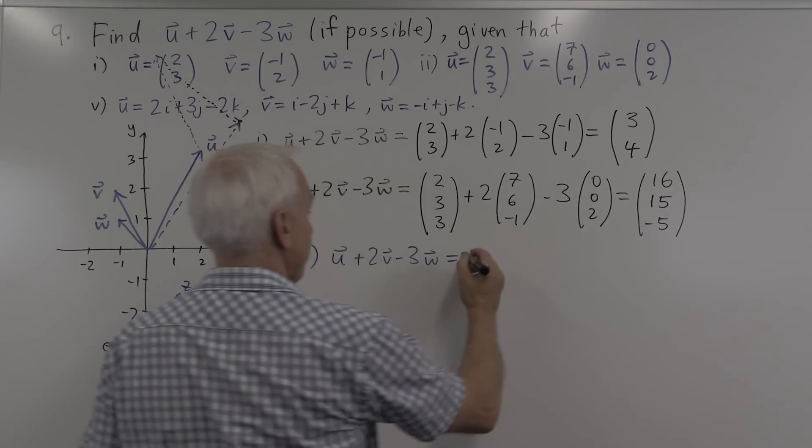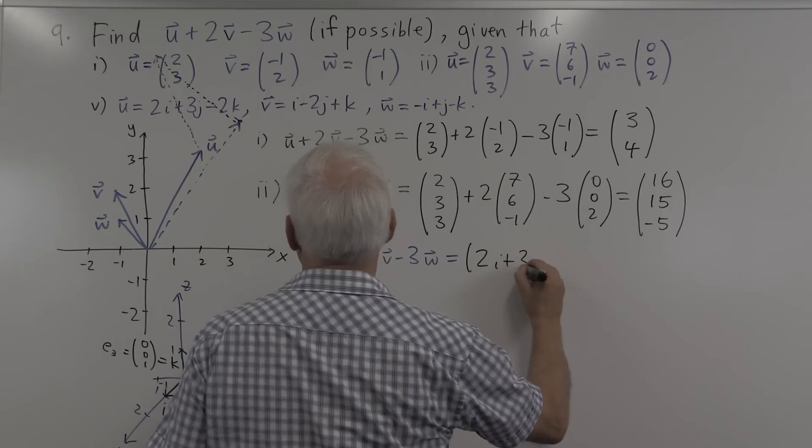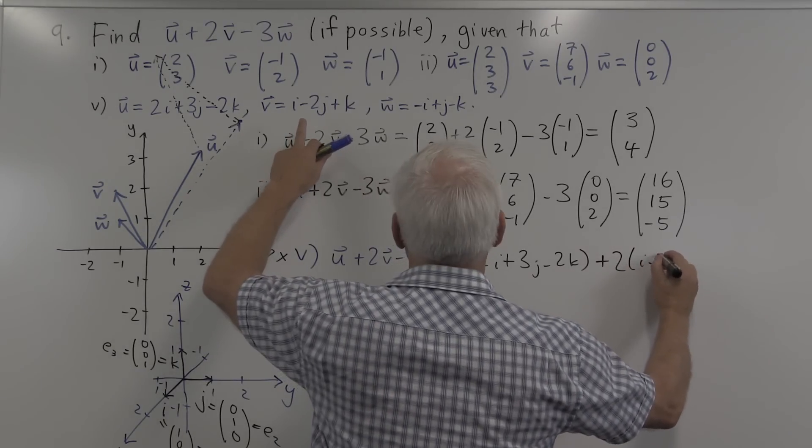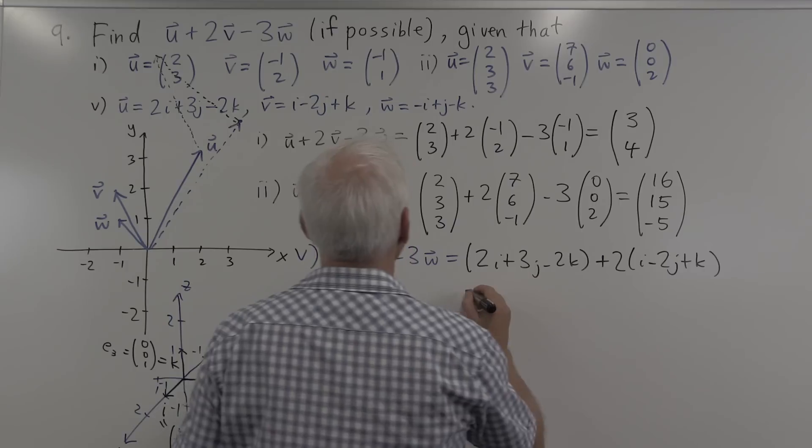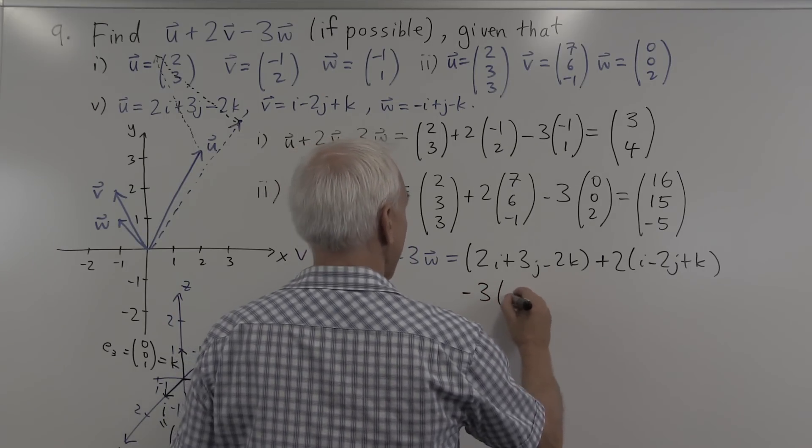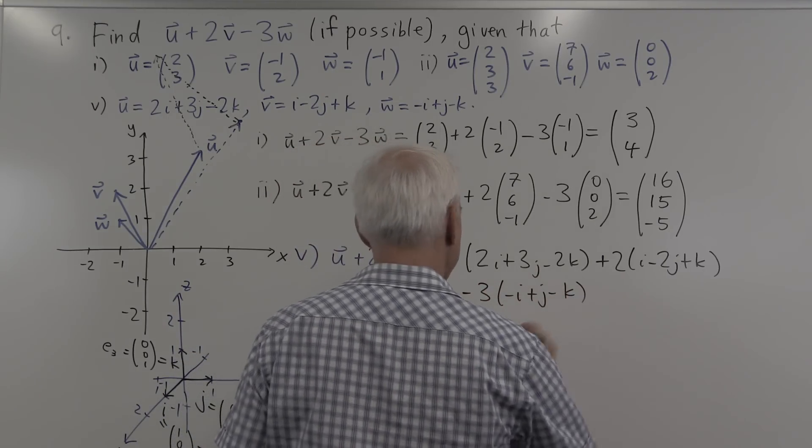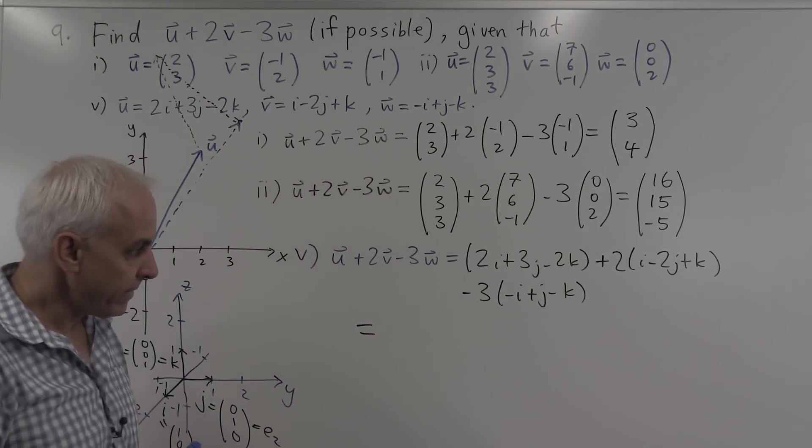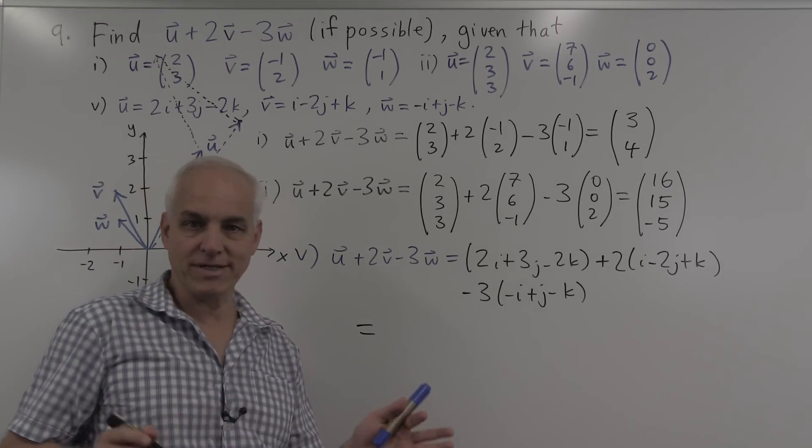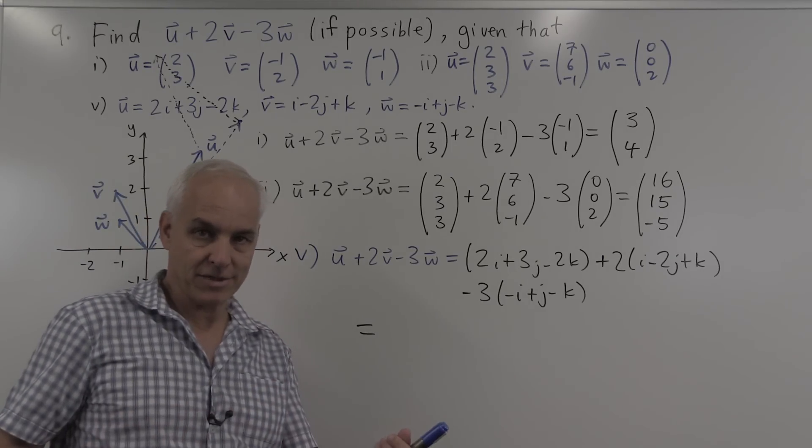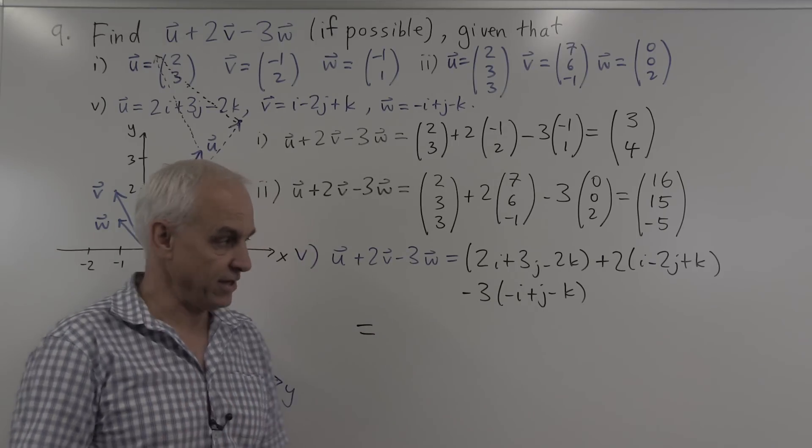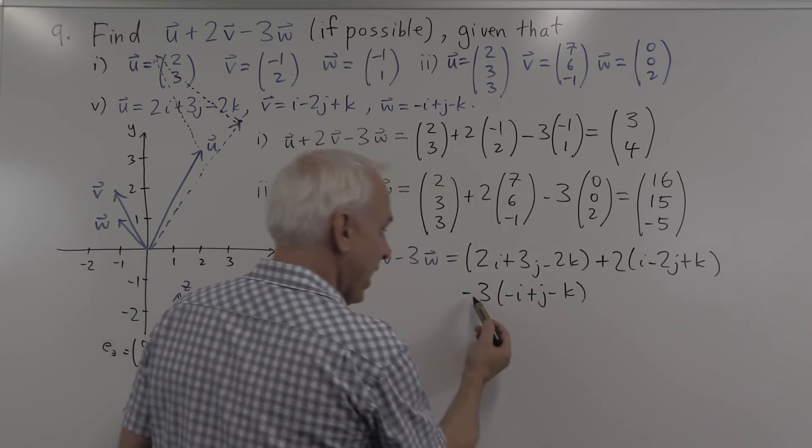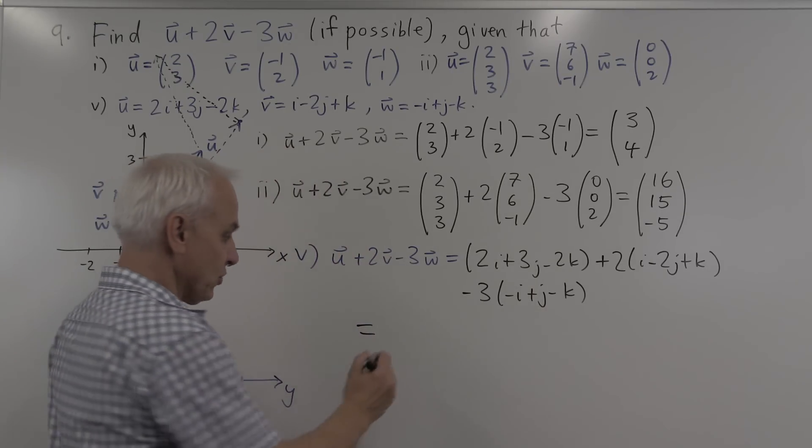OK, so we're asked to compute this combination. And we're told what u, v, and w are in terms of i, j, and k. So u is going to be 2i plus 3j minus 2k, plus 2 times v we're told is i minus 2j plus k, and minus 3w, which is minus i plus j minus k. All right, so can we put that all together? It's just a question of looking at the three components again separately. Multiples of i together, the multiples of j together, the multiples of k together. So how many i's do we have all together? There's 2i here, looks like there's 2i here, and a total of plus 3i there, or a total of 7i.